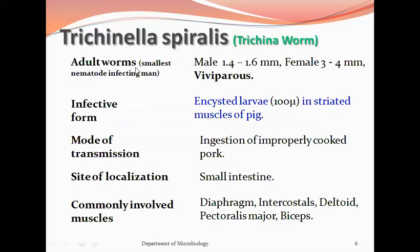The male Trichinella spiralis is 1.4 to 1.6 mm in length, while the female is 3 to 4 mm in length. This worm is the smallest nematode that infects humans. The female is viviparous. The encysted larvae in the striated muscles of pigs are the infective form for humans. Ingestion of improperly cooked pork causes infection. The worm localizes in the small intestine, and the commonly involved muscles are the diaphragm, intercostal muscles, deltoid, pectoralis major, and biceps.